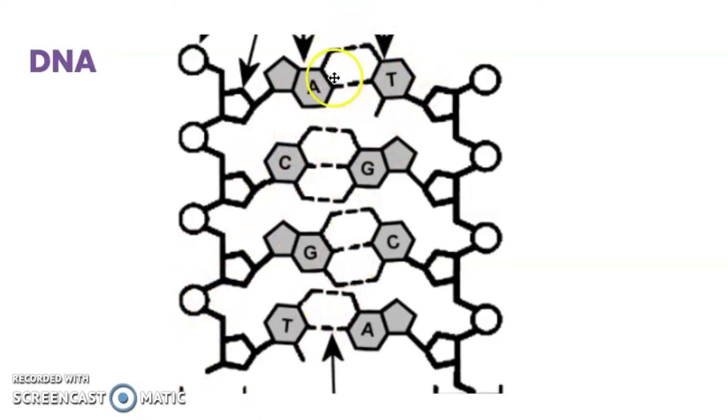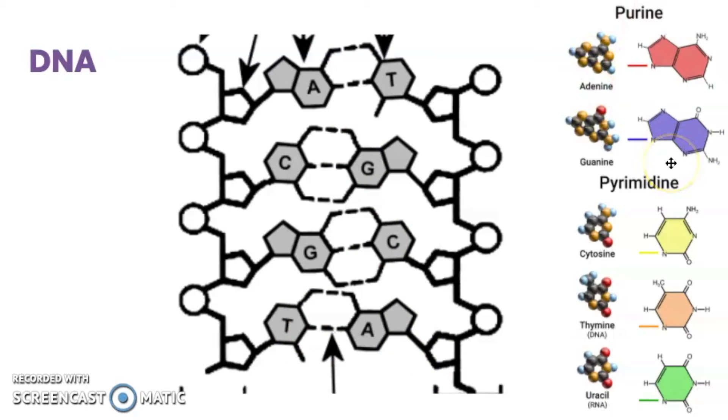Now adenine and thymine are pairing together with two hydrogen bonds. Cytosine and guanine pair together with three hydrogen bonds. But these are easily broken during DNA replication or transcription. Here are purines and pyrimidines up close. You can see that adenine and guanine have two rings. Pyrimidines have one.